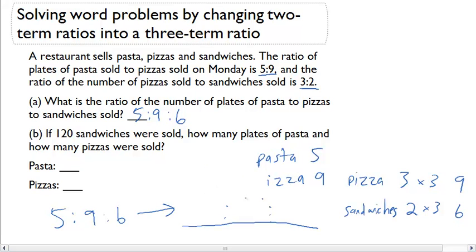Now I'm given that there are 120 sandwiches sold, so I know my last term has to be 120. If this ratio went from 6 to 120, I had to multiply this by 20.